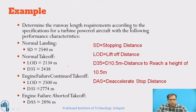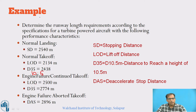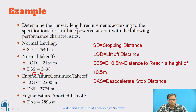Let us take an example to understand in detail how to calculate the various parameters for normal landing, normal takeoff, engine failure takeoff, and engine failure aborted cases. Given values: SD (stopping distance), LOD (lift-off distance), D35 (equivalent to D10.5 in feet), LOD for continued takeoff, D10.5, and DAS (decelerate-stop distance) are all provided.